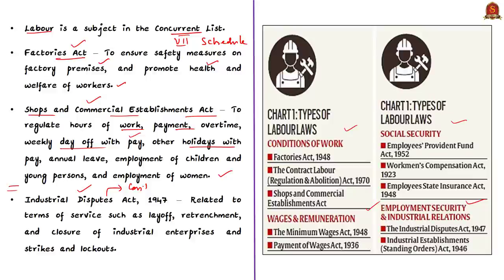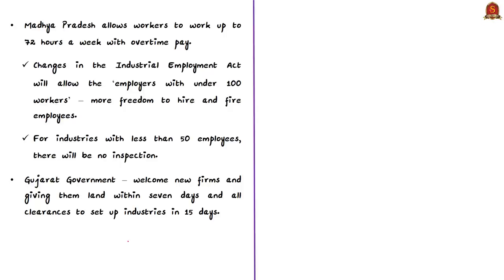The Industrial Disputes Act of 1947 relates to terms of services such as laying off, retrenchment — that is reducing the number of employees — and closure of industrial enterprises. It also deals with strikes and lockouts. With this background, we will see the recent changes made by the state governments of Madhya Pradesh, Gujarat, and Uttar Pradesh.